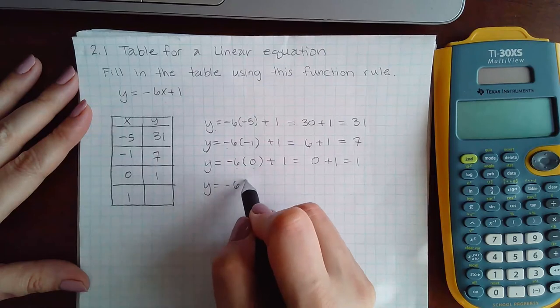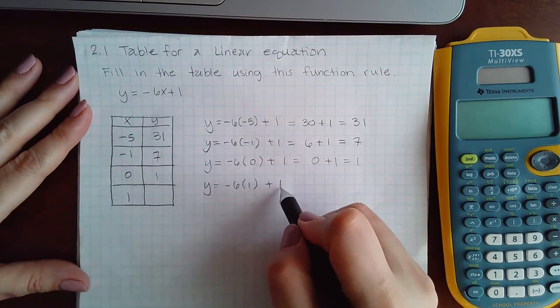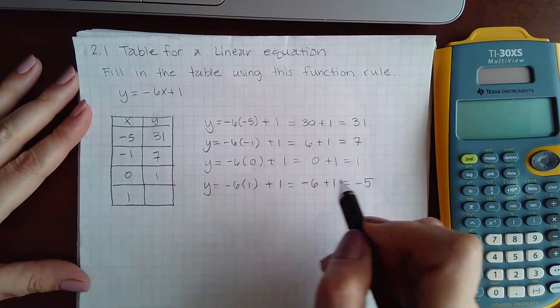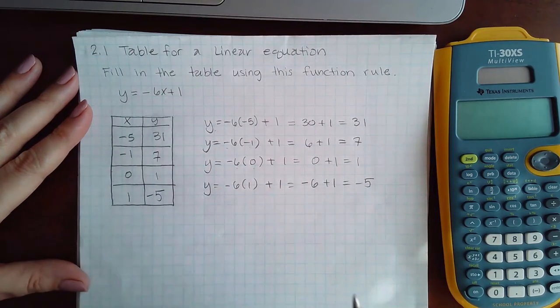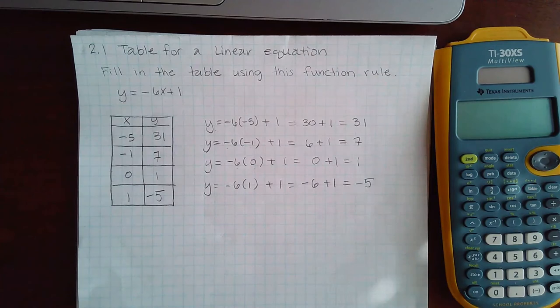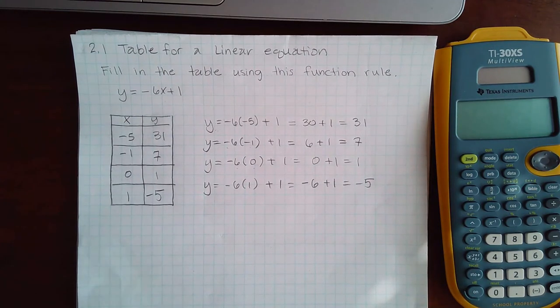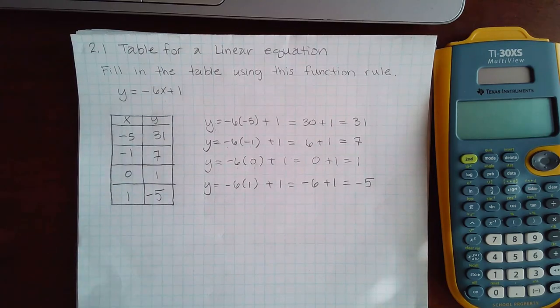And then for the last one, we're going to plug in 1, which is negative 6 plus 1, which is negative 5. And that's all they're asking for the table. Once you fill in the table, you just submit it.